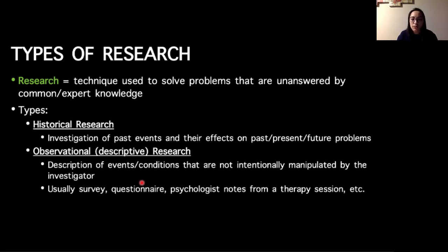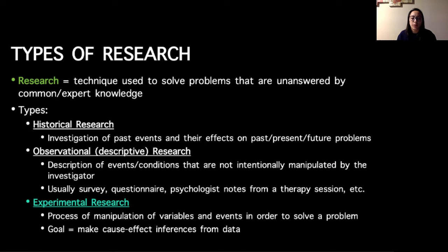We can have observational research, which is a very common type used in psychology when we just observe what people do and write down common characteristics. There isn't an intentional manipulation by the investigator. Experimental research is what we're focusing on in this class—the process of manipulating variables and events in order to solve a problem. Our primary goal is to make a cause and effect inference.